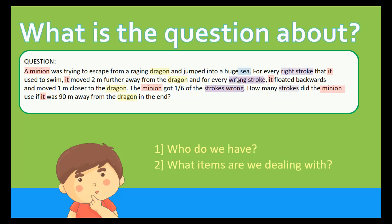Lastly, we need to think about what is the relating topic. By looking at the figures and the numbers, what can I tell? Here we see 2 meters, 1 meter, 90 meters. Meter is the unit used to measure distance, so it has something to do with distance. And then we have 1/6 — this is obviously a fraction. So the entire question has something to do with distance and fractions.